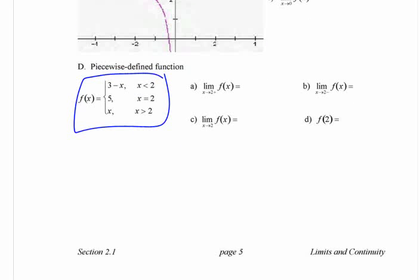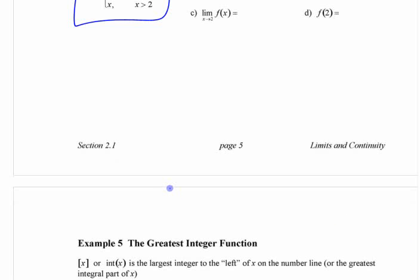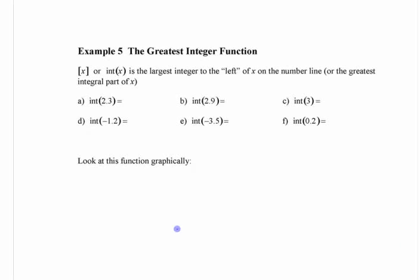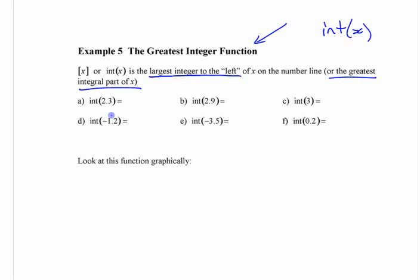I think we've probably talked about what limits are enough by this point. The last thing in this section is the greatest integer function — not anything very important, but it's a function you can easily put in your calculator that has some jumps in it. There's a function in your calculator called int(x). All it does is tell you the greatest integer to the left — the greatest integer less than the value you're looking at.